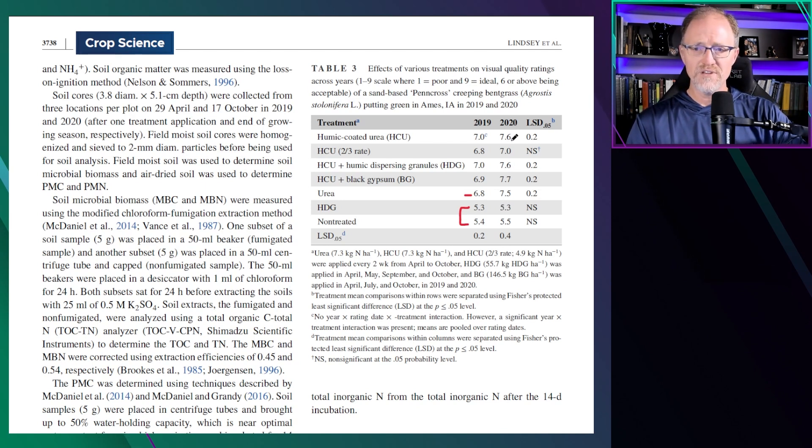Then in 2020, the same thing. Nothing was greater than urea. So adding humic-coated urea rather than just urea did not result in any annual average quality increase. The two that declined were just the dispersable granule alone or the non-treated turfgrass.